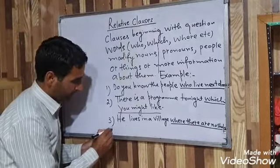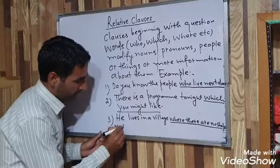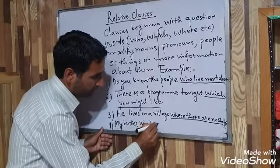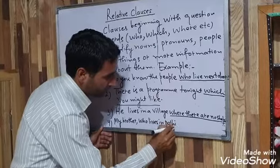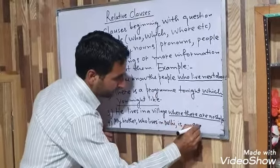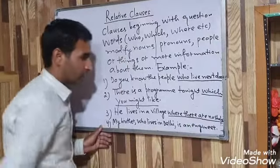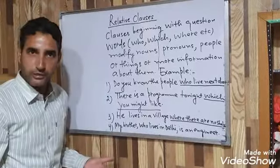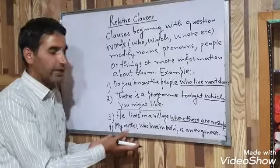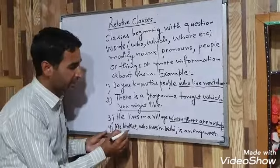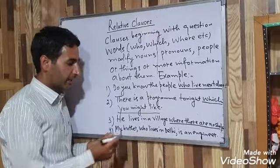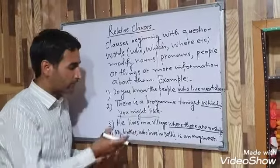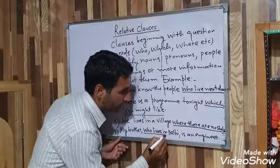Another example: 'My brother, who lives in Delhi, is an engineer.' Here I have used commas. If I write 'my brother is an engineer,' the information is already clear. So here I am giving additional information about my brother. The Relative Clause is 'who lives in Delhi,' and it provides additional information about my brother.